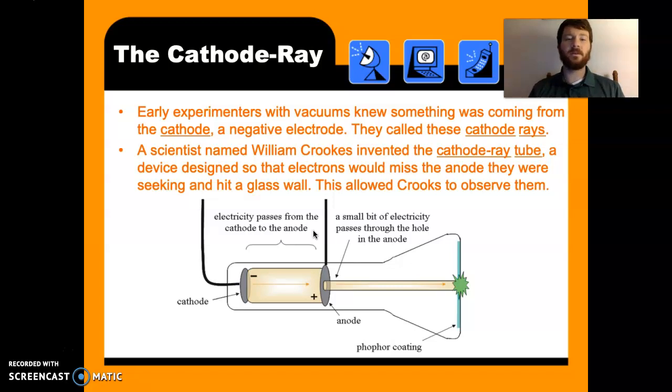The cathode ray. Early experiments with vacuums knew something was coming from a cathode, a negative electrode. We know these as electrons. They called them cathode rays. They had no clue. They said, hey, there's some sort of rays coming from this cathode.